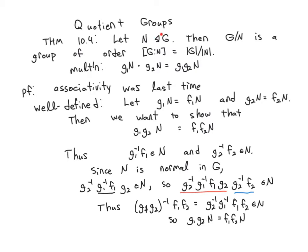Let N be a normal subgroup of G. Then this set, which we're going to call G mod N, is a group. And if G is a finite group, then the order of this quotient group is the index of N in G, which by Lagrange's theorem is the size of G divided by the size of N. And the group operation is given by this multiplication.